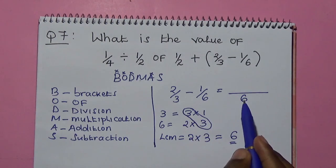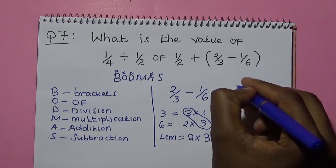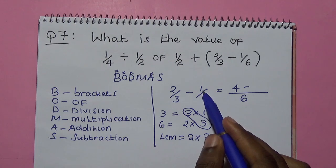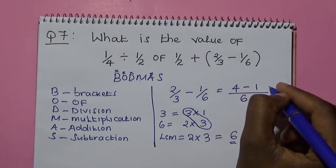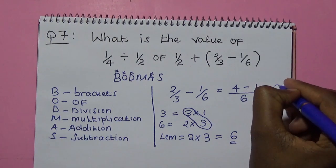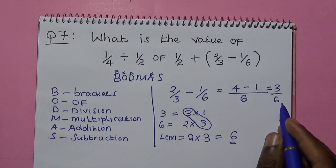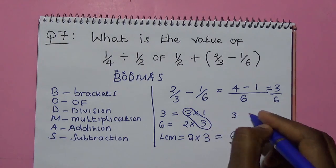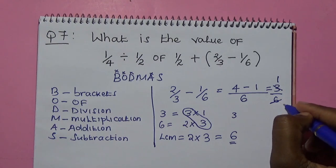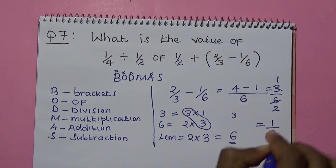Now we can subtract. 6 divided by 3 is 2, and 2 times 2 is 4. Then 6 divided by 6 is 1, and 1 times 1 is 1. Therefore, 4 minus 1 is 3, and we have 3 over 6. We can simplify by dividing by 3: 3 divided by 3 is 1, and 6 divided by 3 is 2. Therefore, the answer is 1 over 2.